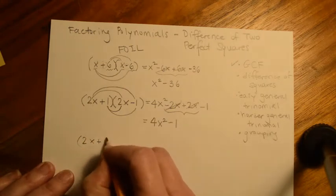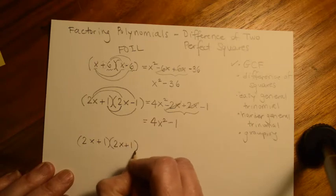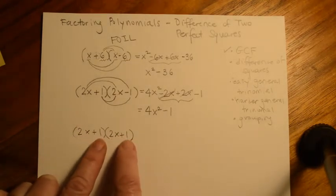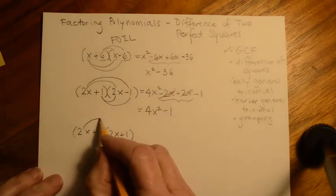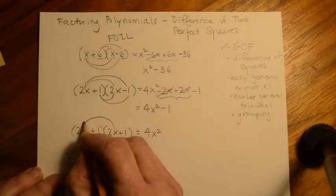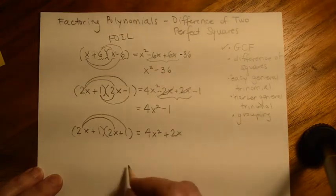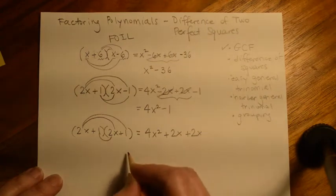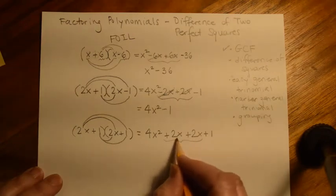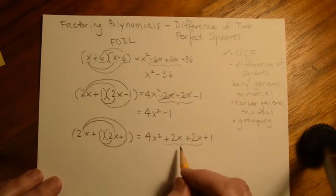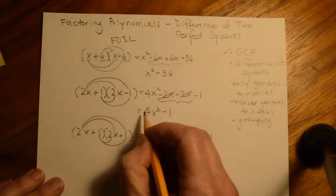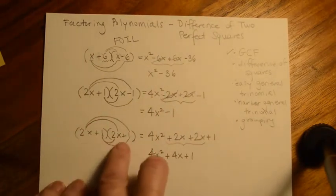Let's say we have 2x plus 1 times 2x plus 1. They're binomials with the same first and last terms, but the signs are not opposite — they're the same. So 2x times 2x is 4x squared. 2x times positive 1 is positive 2x. 1 times 2x is another positive 2x. And 1 times 1 is plus 1. Combining like terms: the two 2x's add together to give 4x, so we get 4x squared plus 4x plus 1 — no canceling.